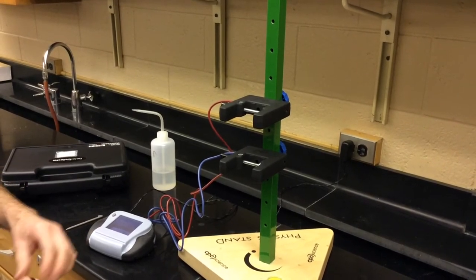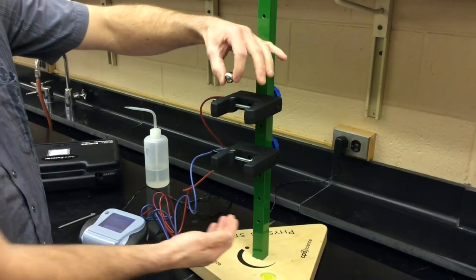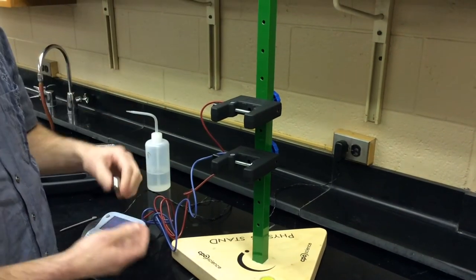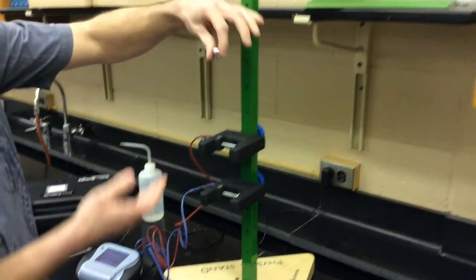You're going to do that three times with the top photo gate at the sixth hole up when you're holding it at hole number seven. Then you're going to move it up two spots to hole number eight, and you're going to hold the marble at number nine and do three trials like that.